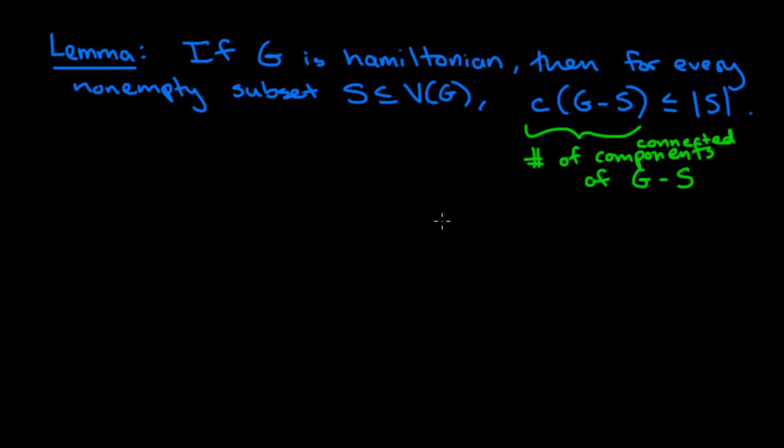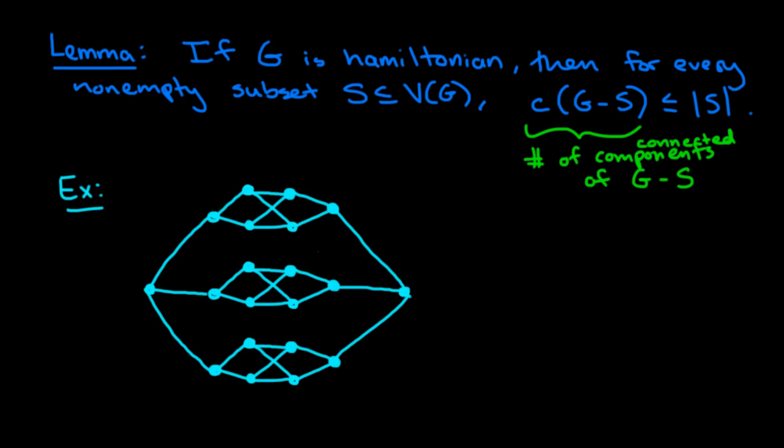So what we're going to do in this video is take a look at an example where we can use this little lemma to show an example of a graph which is not Hamiltonian. So I've prepared the example here. Take a look at this graph. What we can do is we can say, if it's Hamiltonian, then it must satisfy this condition. So if we can show that this condition is not satisfied, then there must be no Hamilton cycle of the graph.